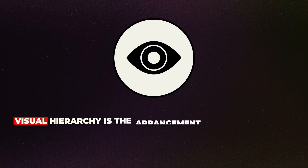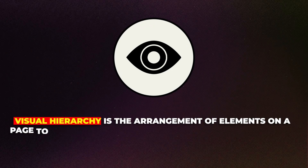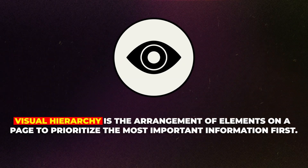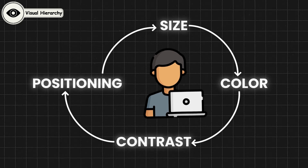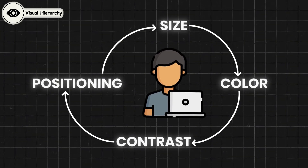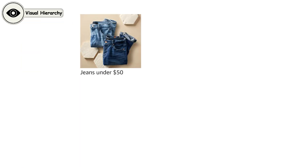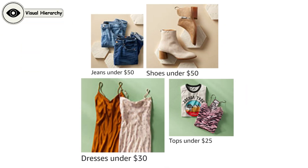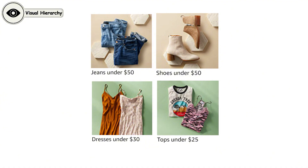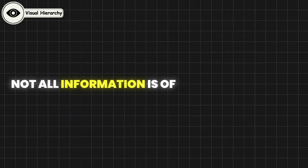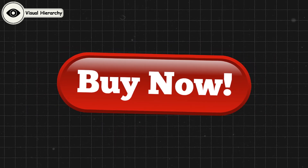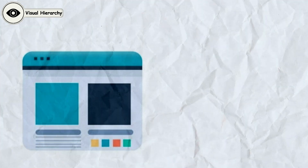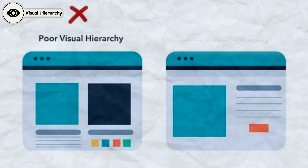Visual hierarchy is the arrangement of elements on a page to prioritize the most important information first. Designers use size, color, contrast, and positioning to create a visual flow that naturally guides users' attention to key actions or content. This principle is vital for making interfaces intuitive and helping users process information efficiently. The idea behind visual hierarchy is that not all information is of equal importance — by emphasizing certain elements, like making a call-to-action button large and brightly colored, designers ensure that users focus on the essential parts of the interface first.